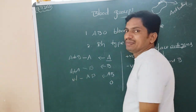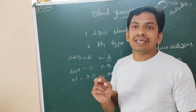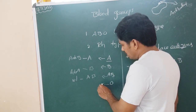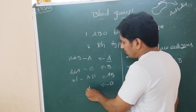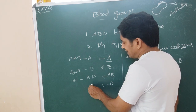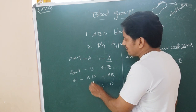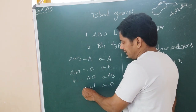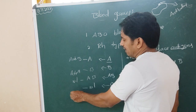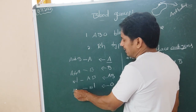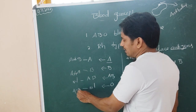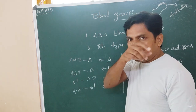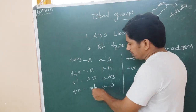Antibodies are absent in the plasma of AB group people. Whereas the O group — they do not have any antigens on the RBC surface. However, these people have both anti-A and anti-B antibodies in the plasma of the blood.